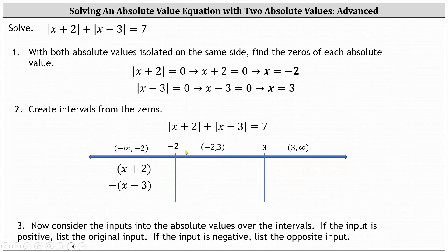Now let's consider the inputs in the next open interval from negative two to three. X plus two is always positive over this interval, so we just list the input of x plus two. However, x minus three is still negative over this interval, and therefore we list the opposite of the input, or the opposite of the quantity x minus three. Over this interval, we replace the absolute values with these two expressions.